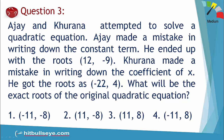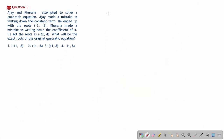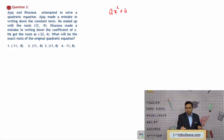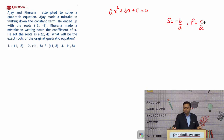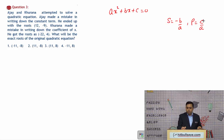In this question, Ajay and Khurana attempted to solve a quadratic equation. Ajay made a mistake in the constant term and found the roots as 12 and −9. Khurana made a mistake in the coefficient of x and got roots −22 and 4. Since Ajay's error was in the constant term, his product of roots is wrong but the sum is correct. So sum of roots = 12 + (−9) = 3.